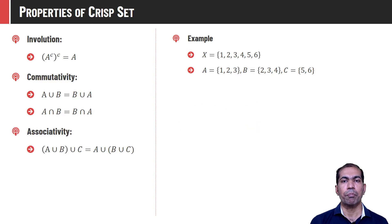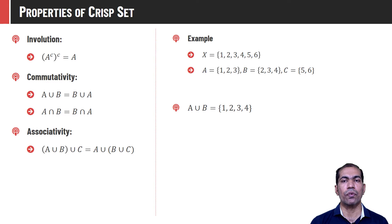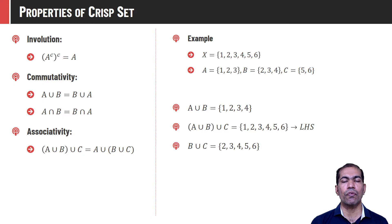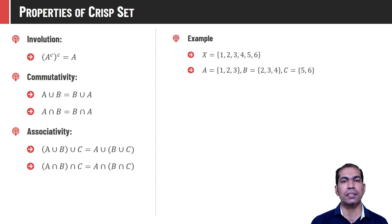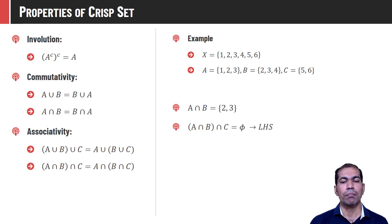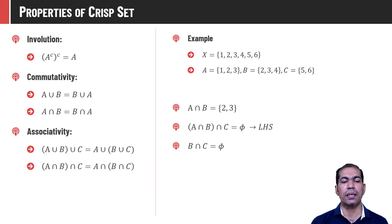Associativity says that A union (B union C) is the same as (A union B) union C. Let us find the left-hand side: A union B = {1, 2, 3, 4}, and union of that with C gives {1, 2, 3, 4, 5, 6}. For the right-hand side, B union C = {2, 3, 4, 5, 6}, and union of that with A gives the same result: {1, 2, 3, 4, 5, 6}. This property also holds for intersection: A intersection (B intersection C) equals (A intersection B) intersection C. The left-hand side: A intersection B = {2, 3}, and intersection of that with C is null. On the right-hand side, B intersection C is null, and intersection of that with A is also null.